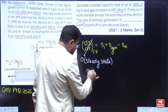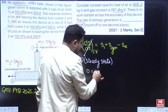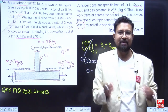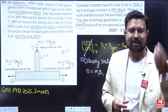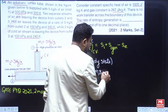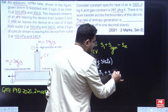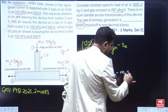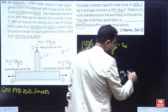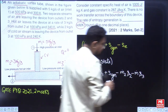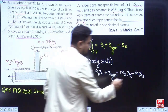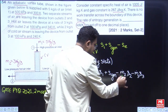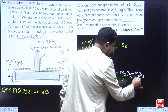Setting ds/dt to zero: 0 equals entropy inlet rate plus entropy generation minus entropy exit rate. Mass enters at m-dot with specific entropy S1. Entropy exits at condition 2 with m-dot-2 and specific entropy S2, and at condition 3 with m-dot-3 and specific entropy S3. Here m-dot-1 is 5, m-dot-2 is 3, and m-dot-3 is 2.